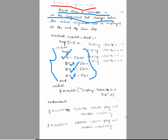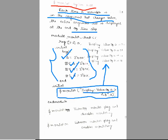We write the command $monitor, which displays the value of 'a' at the end of each time step. The output we get at the end of each time step includes the entire argument list: 'value of a is 0', 'value of a is 1', and so on, corresponding to each change in 'a'.